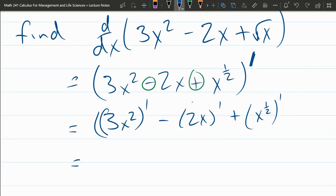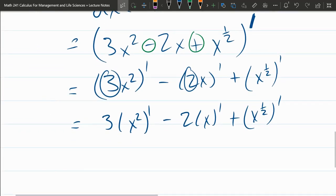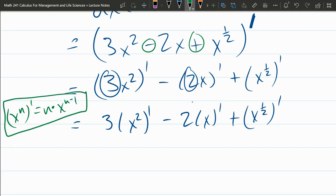Now, we can use a constant multiple rule on these two constant multiples. So let's move those out. So we have 3 times x squared prime minus 2 times x prime plus x to the one half prime. All right, we've taken out all the constants. Now, all of these use the power rule here, which I will write down. x to the n derivative is n times x to the n minus 1. So we're using that property.